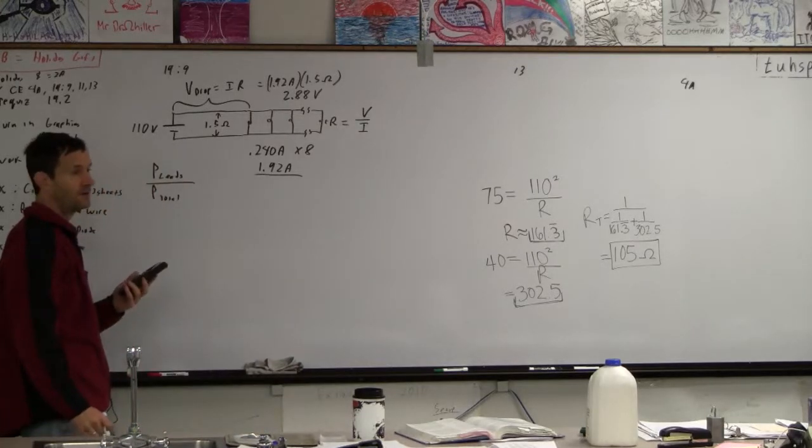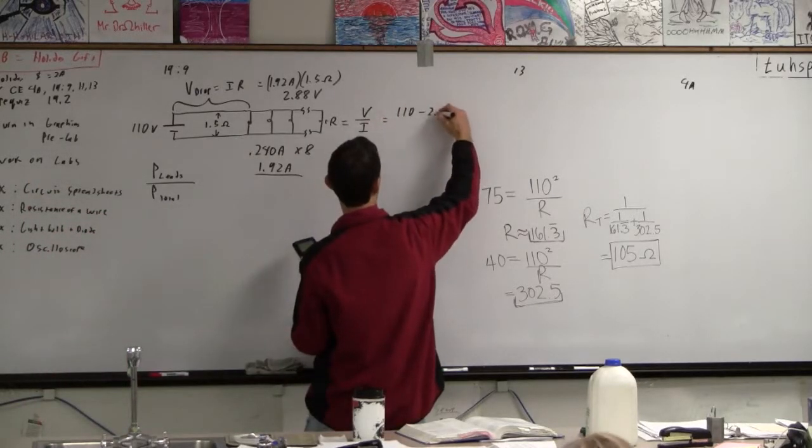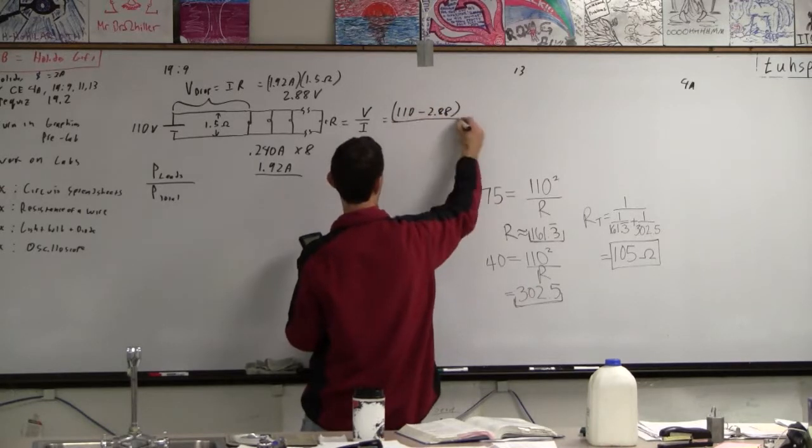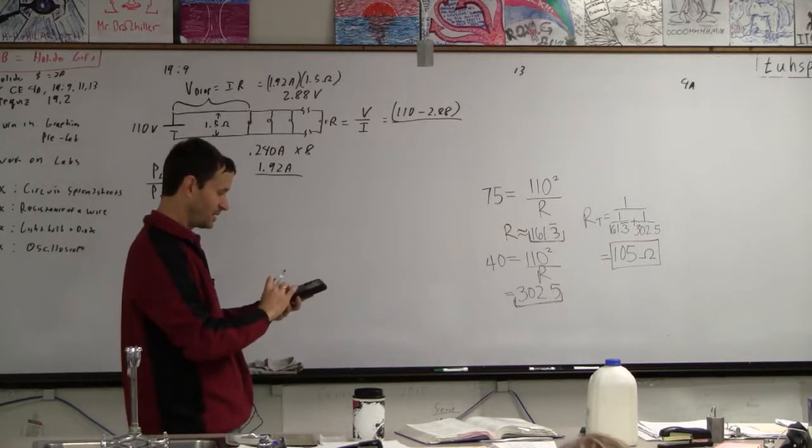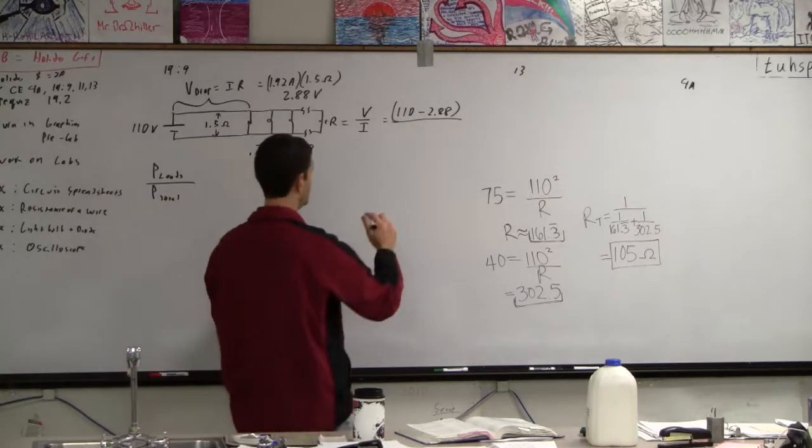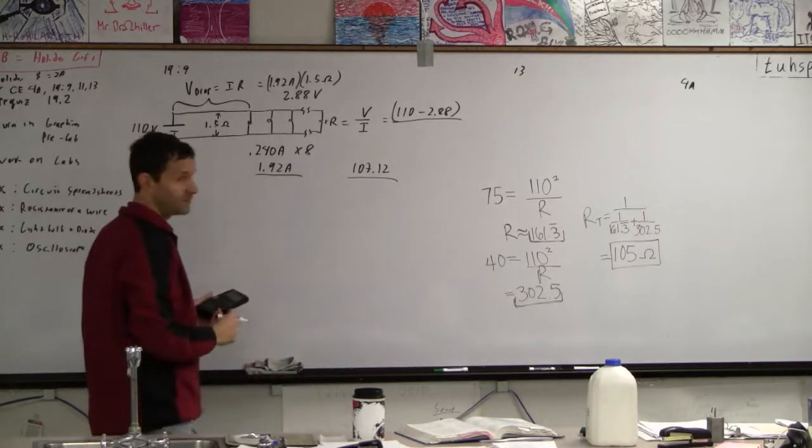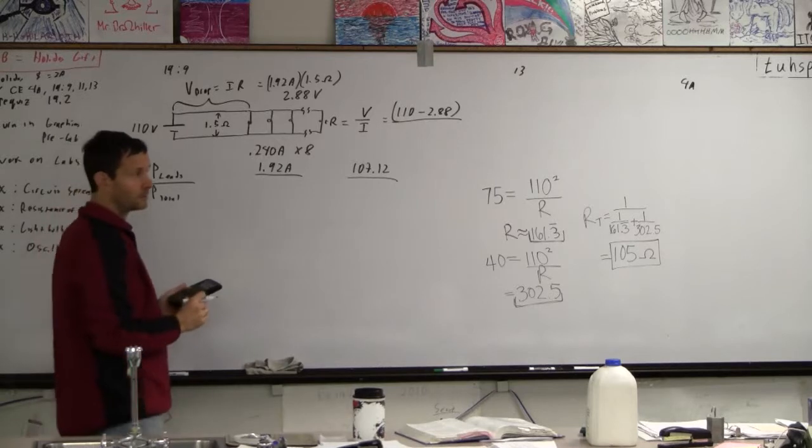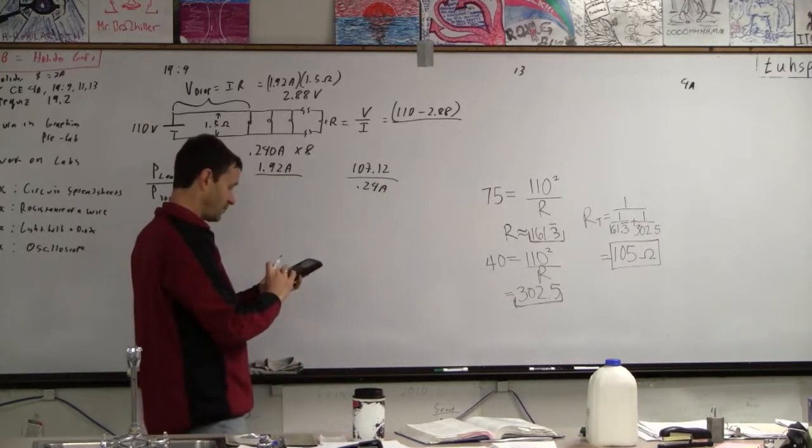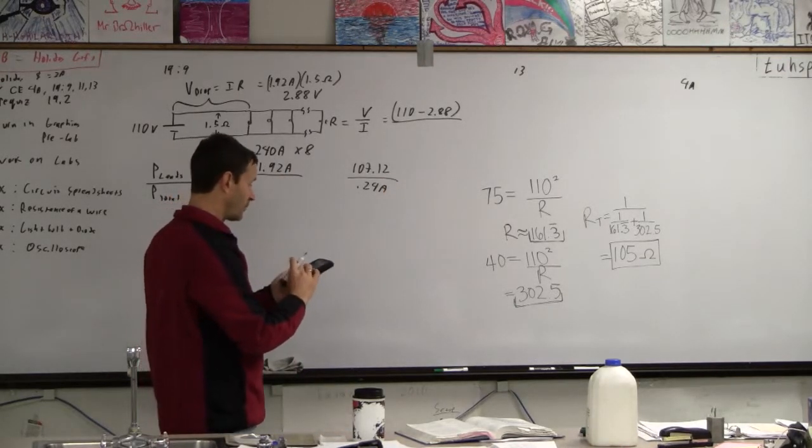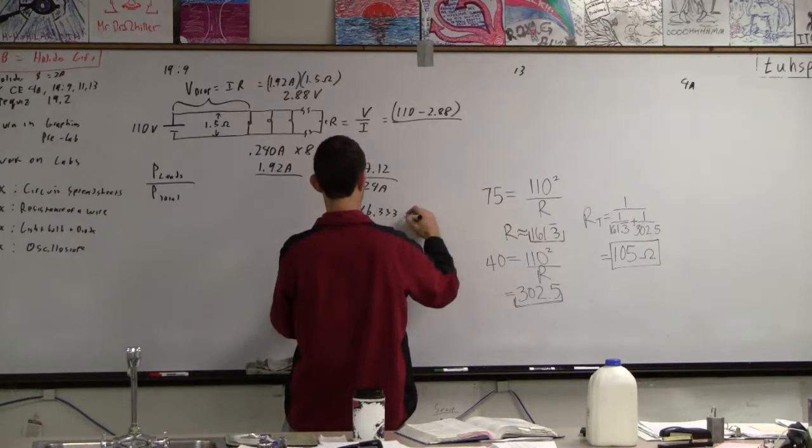What's 110 take away 2.88? Yeah, we could figure that out, right? That's like higher math. I can't quite envisage this. 110 minus 2.88, 107.12. So 107.12. And then how much is the current through each light bulb? Is it 0.24? Through each bulb, right? So that divided by 0.24 is 446.333 ohms.